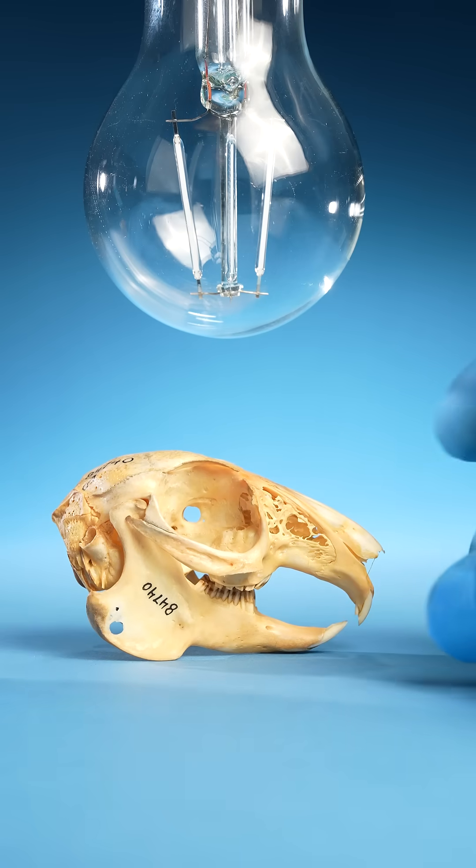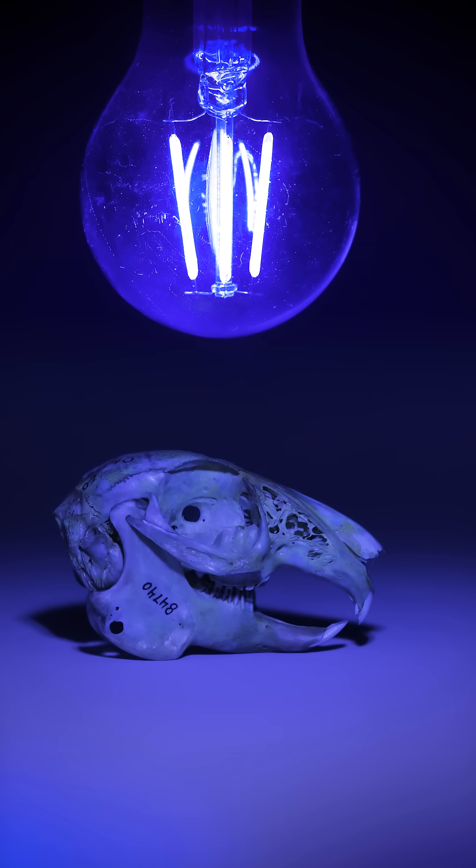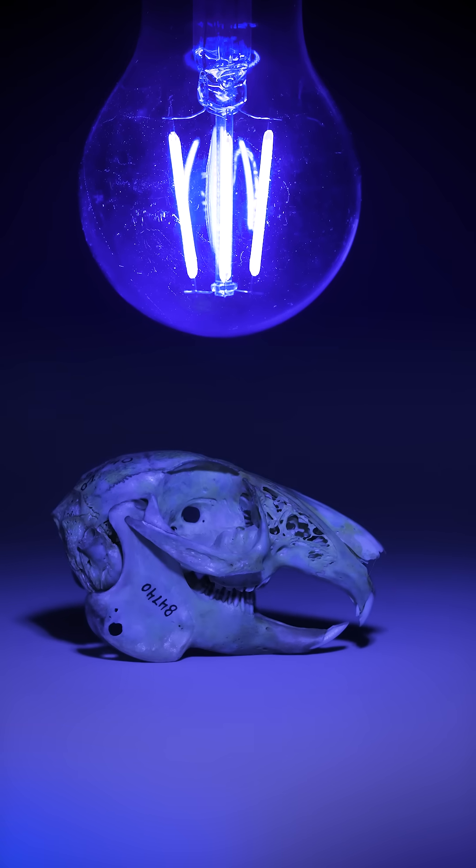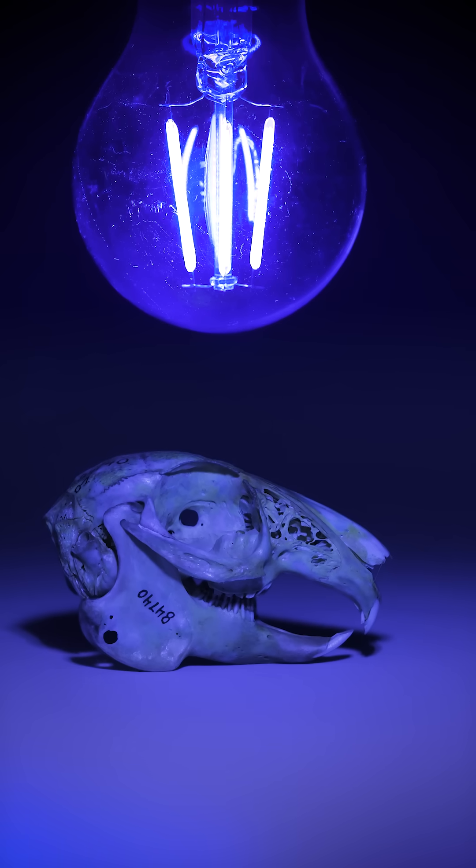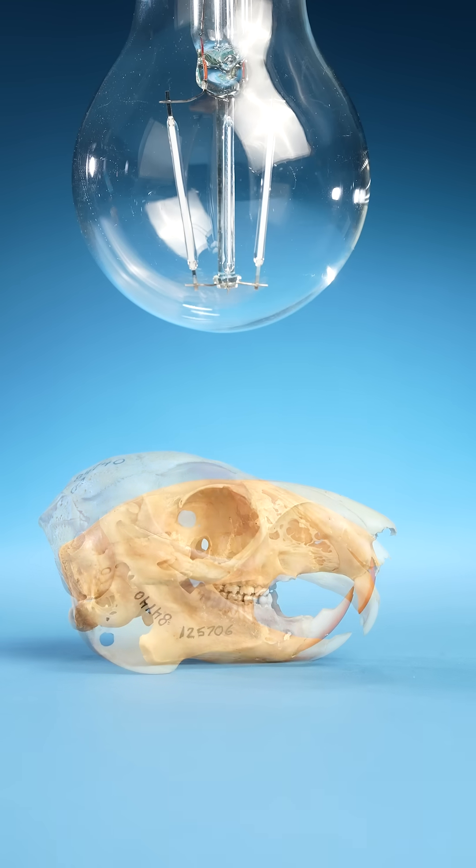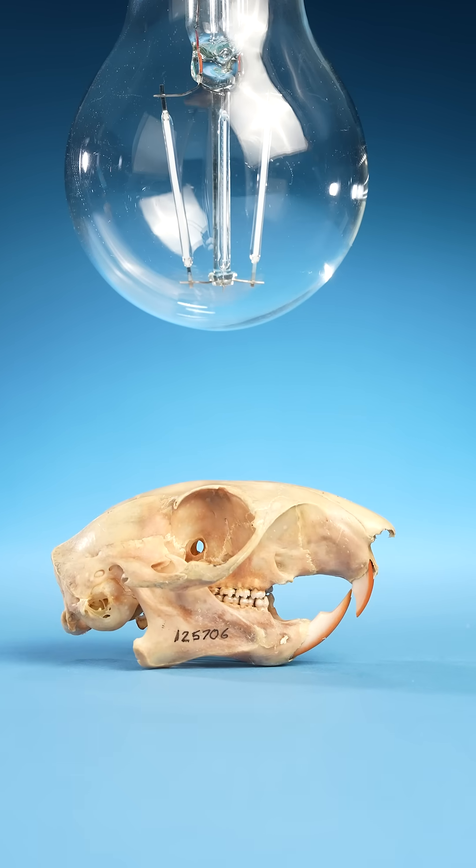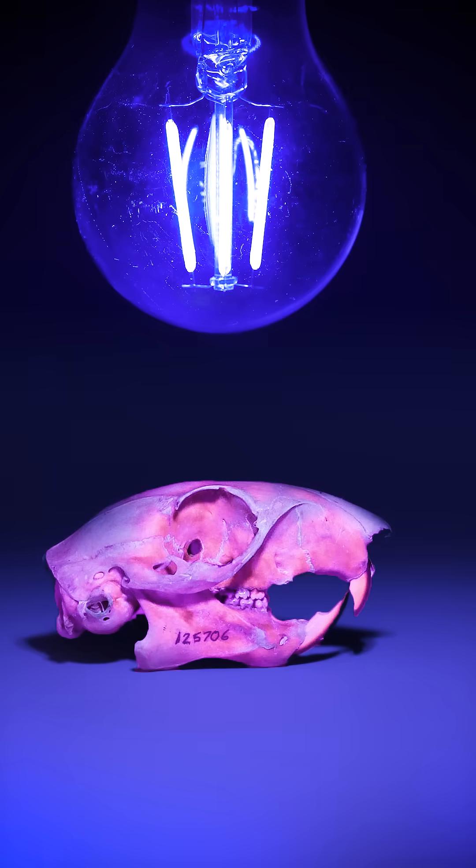here's what a normal rabbit skull looks like. This is what most bones look like under a UV light. Just kind of bluish purple. But here's what a squirrel skull looks like. It's pink.